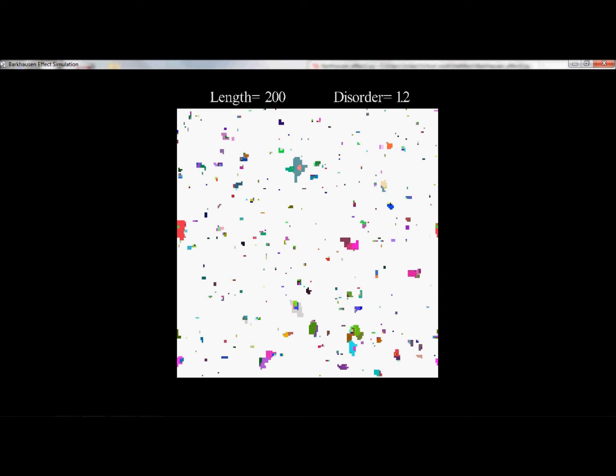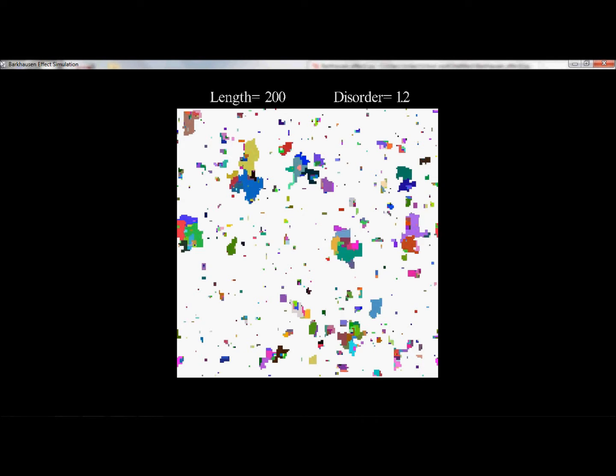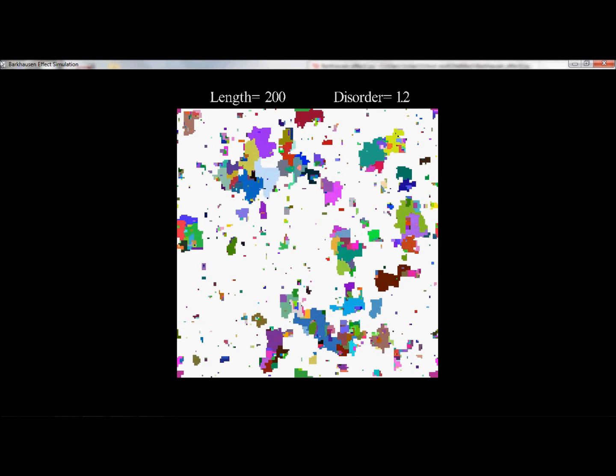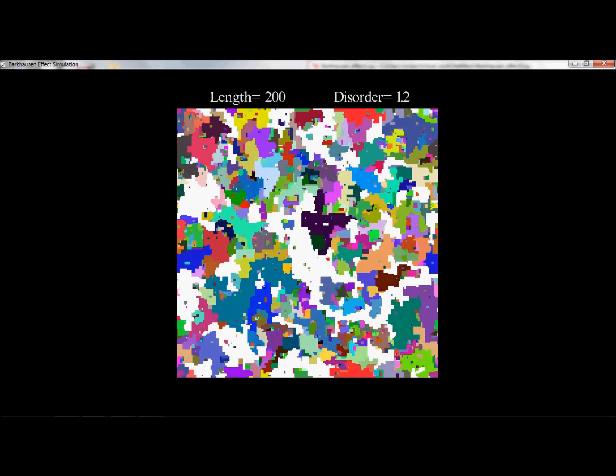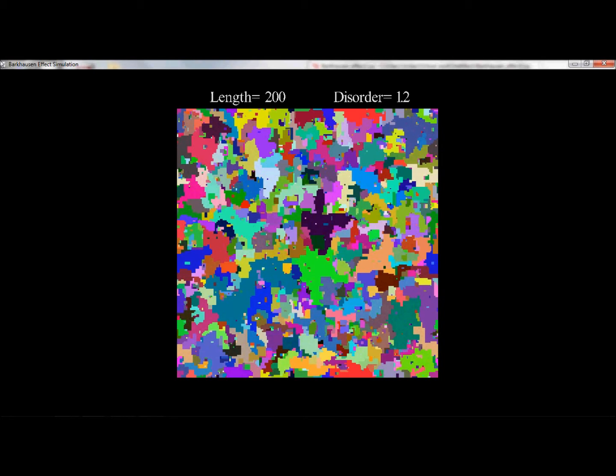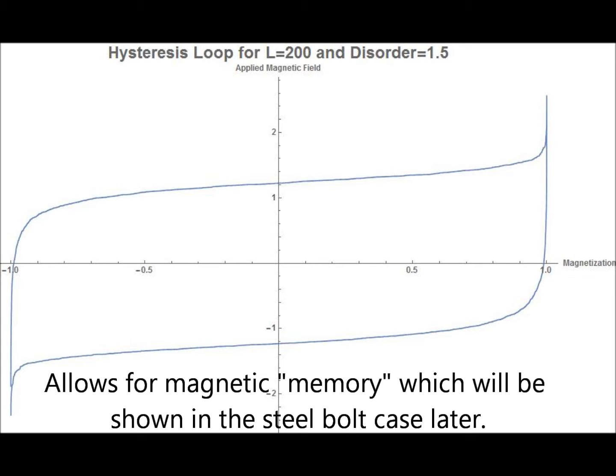While you could probably watch these avalanches all day, it is also fun to plot the applied magnetic field with respect to the magnetization. Increasing the external field until all the spins are aligned one way, and then decreasing the external field back, we get a characteristic hysteresis loop seen here. It can be seen that the magnetization lags behind the applied field.